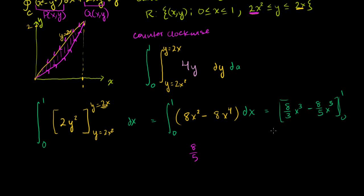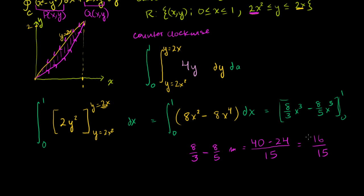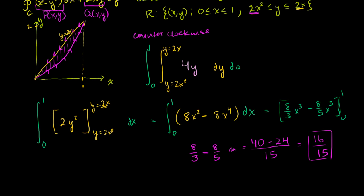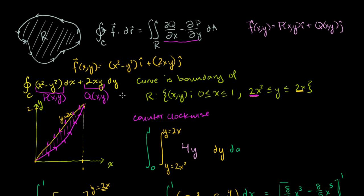So we compute 8/3 − 8/5. Getting a common denominator of 15: 8/3 = 40/15 and 8/5 = 24/15. Therefore 40/15 − 24/15 = 16/15. Using Green's Theorem, the value of the original line integral is 16/15. Hopefully you found that useful — I'll do one more example in the next video.